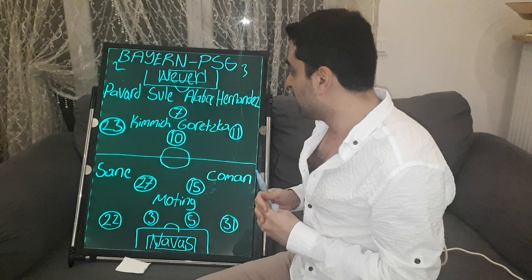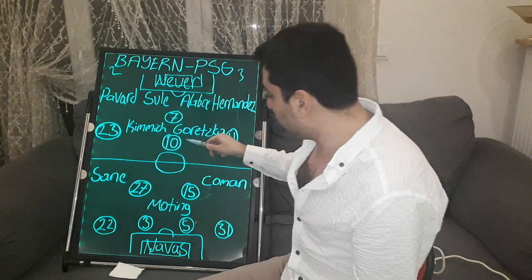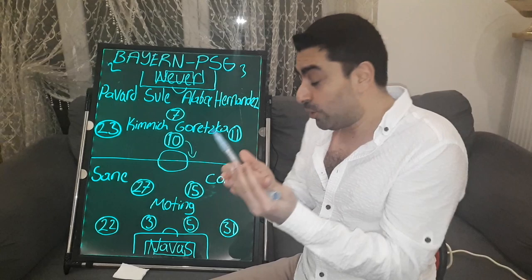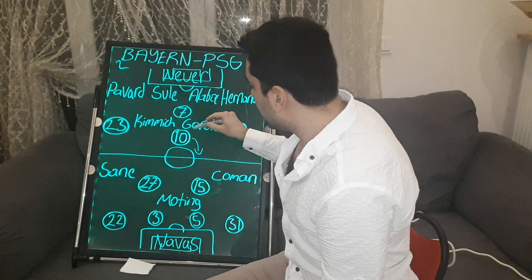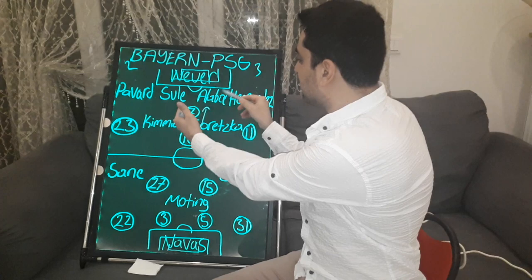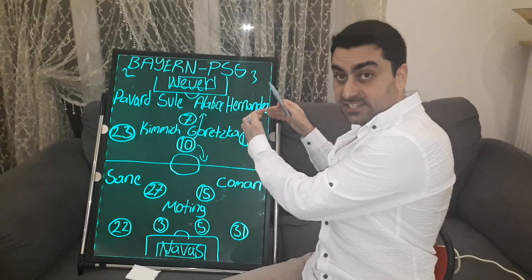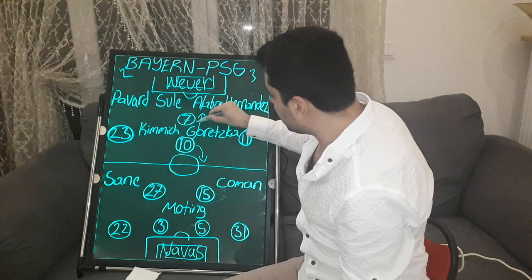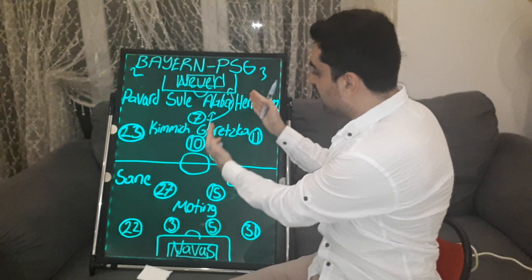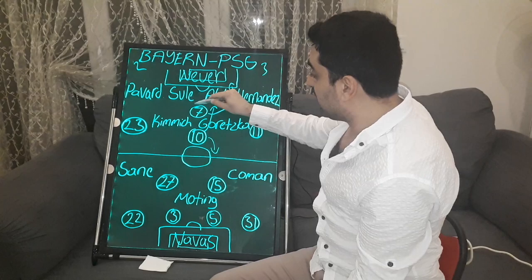Paris Saint-Germain started the game better and faster. Every time Neymar dropped deep and received the ball, he started counter-attacks for PSG. In the beginning of the game, Neymar carried the ball forward and central defender Alaba came close to him. Hernandez remained higher, which allowed Mbappe to get into the penalty area between Alaba and Hernandez from the left wing region. With Neymar's pass, Mbappe scored the first goal for PSG.